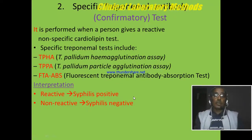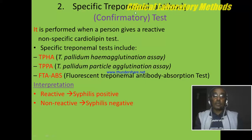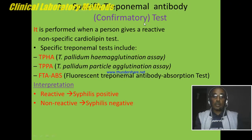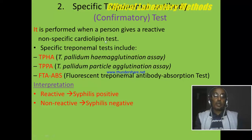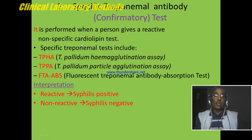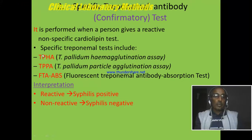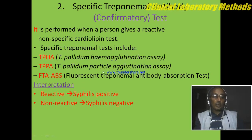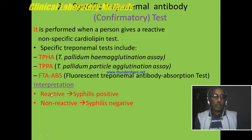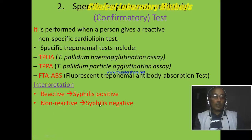The second antibody test is the specific treponemal antibody test. It is a confirmatory test because this antibody is produced specifically to bind treponemal antigen. This test is performed when the non-specific antibody test is reactive, to confirm syphilis. The tests used for this confirmatory test are TPHA, TPPA, and FTA. Interpretation: Reactive means syphilis positive; Non-reactive means syphilis negative.